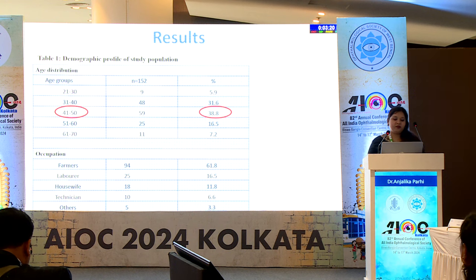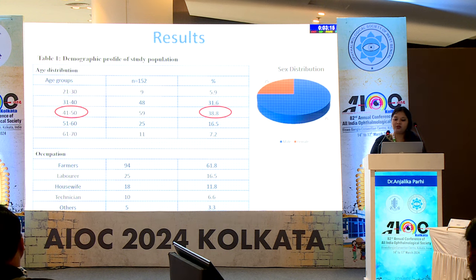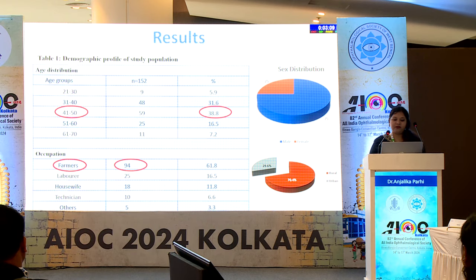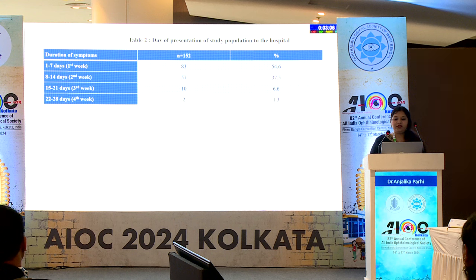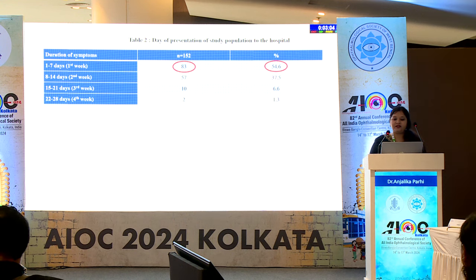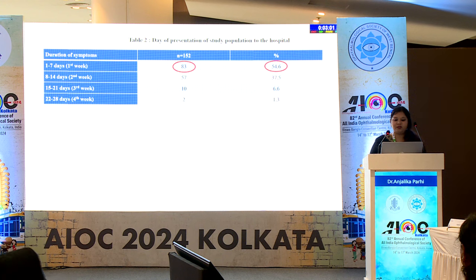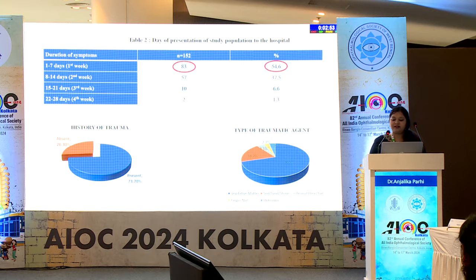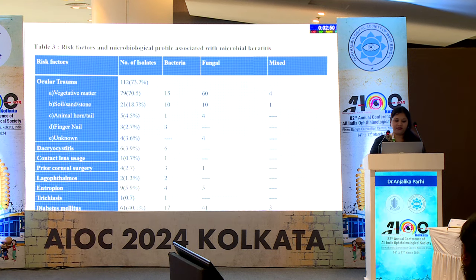Results: the most common age group was 41 to 50 years; males showed higher preponderance. Most patients were from rural areas engaged in agricultural work. More than half presented within 1 to 7 days of onset. History of trauma was present in 73% of patients; vegetative matter followed by soil, sand and stone was the most common offending agent. The most common ocular risk factor was eyelid abnormalities followed by dacryocystitis; diabetes mellitus was the most common systemic risk factor.